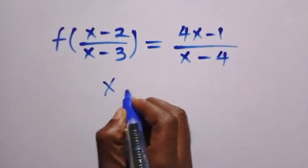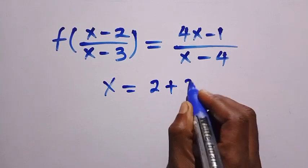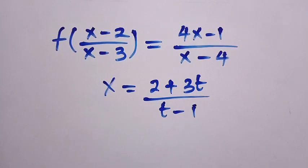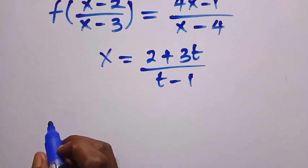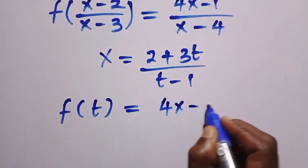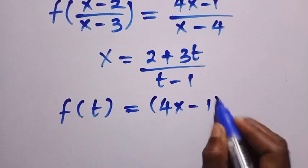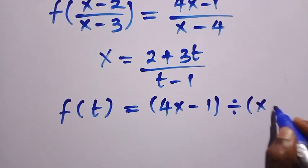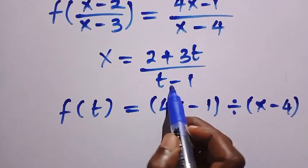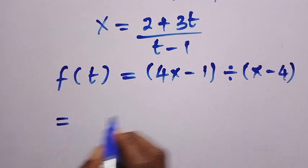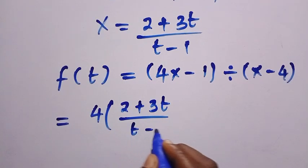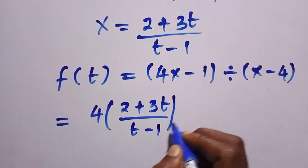Since x equals 2 plus 3t divided by t minus 1, we substitute. We have replaced the whole of x minus 2 over x minus 3 with only t. So we have f of t equals 4x minus 1 divided by x minus 4, where every x is replaced with 2 plus 3t over t minus 1. Then we have 4 into bracket of 2 plus 3t divided by t minus 1, then minus 1.